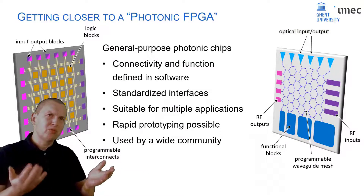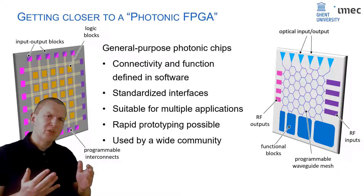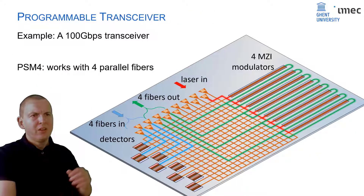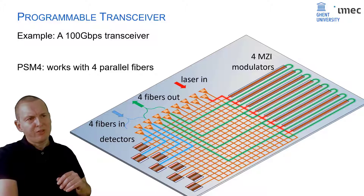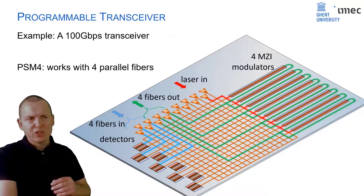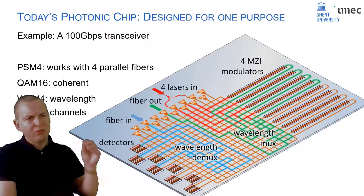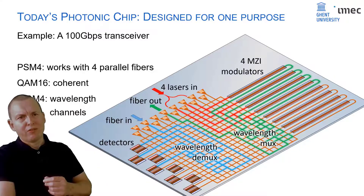This brings us to what we could call a photonic FPGA: a general-purpose chip where we can define connectivity in software with standardized interfaces. This could open up photonics to a much wider community, just like programmable electronics gave more people access to electronics. Going back to our example, we can easily program a parallel single-mode fiber transceiver by connecting fiber ports to modulators and detectors, or reorganize connections to make a coherent communications modulator for a QAM-16 coherent format, and even use the mesh to implement wavelength multiplexers and demultiplexers for wavelength division multiplexing.